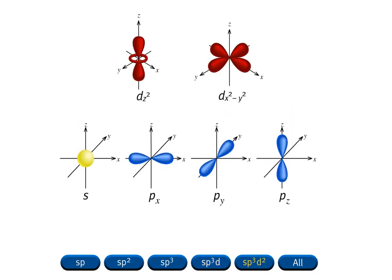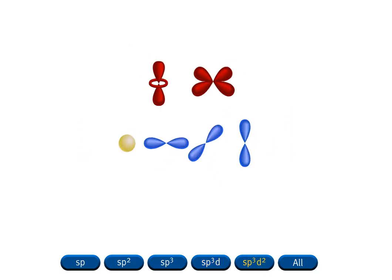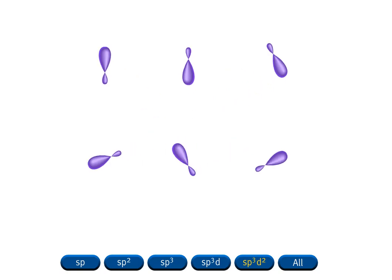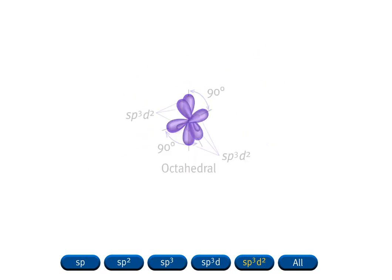Mixing an s orbital, three p orbitals, and two d orbitals generates six equivalent sp3d2 hybrid orbitals. Note that the number of hybrid orbitals produced is equal to the number of atomic orbitals that are hybridized. The orbitals are arranged at 90 degrees to one another in an octahedral arrangement.